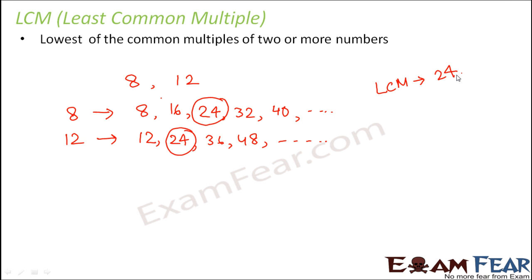Now, the question is what is the significance of this LCM? If you look at it carefully, you would see that this is the smallest number that both the numbers are factors of. Basically 24 is the smallest number of which 8 is also a factor and 12 is also a factor. 24 is the minimum number for which both 8 and 12 are factors of.